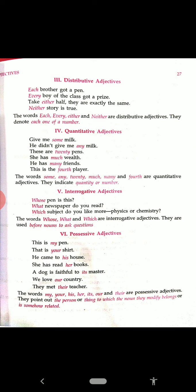The sixth one is possessive adjective. Possessive means somebody or something has its own thing. Just as: This is my pen. That is your shirt. The pen belongs to me — then it is my pen. The shirt belongs to you — that is your shirt. He came to his house. She has read her books. Our country. A dog is faithful to its master. We love our country. They met their teacher. So the words my, your, his, her, its, our, and their are possessive adjectives — they are followed by the nouns: my pen, your shirt, his house, her books, its master, our country, their teacher.